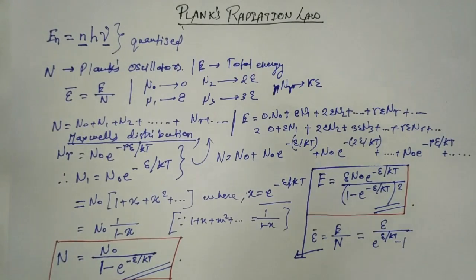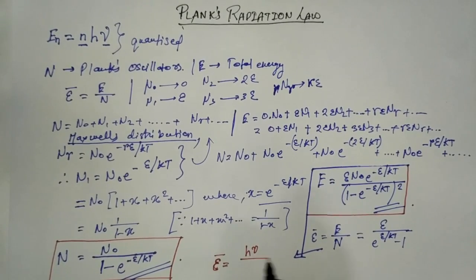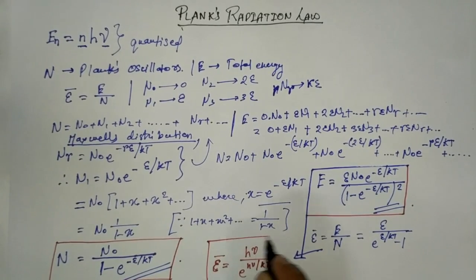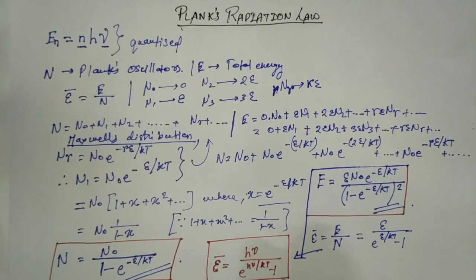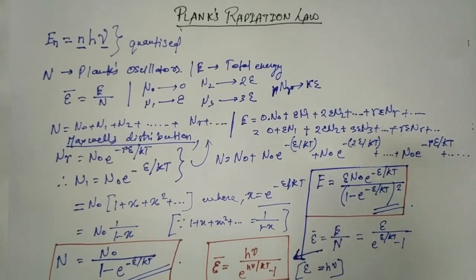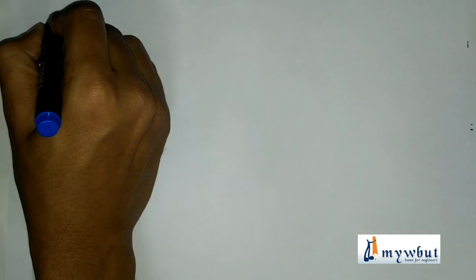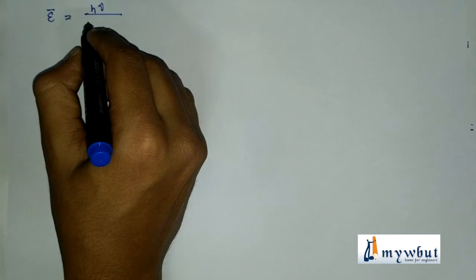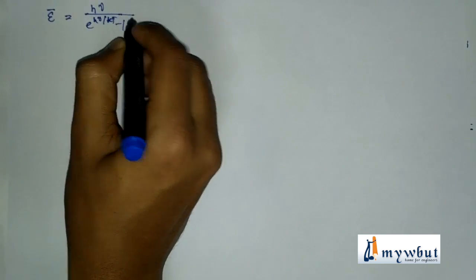Since ε = hν, the final result is: ε̄ = hν / (e^(hν/kT) − 1). This is the average energy of a Planck oscillator.